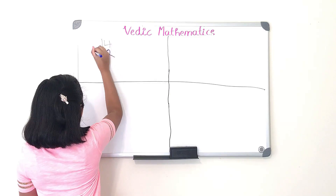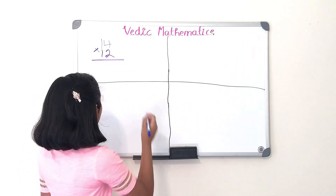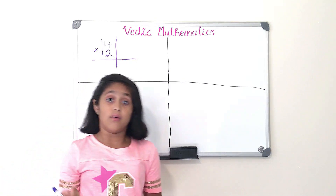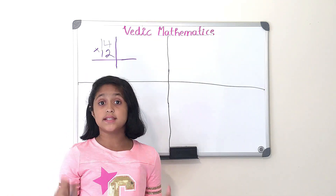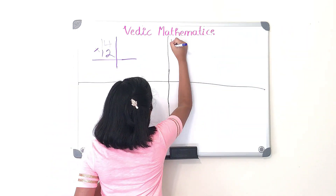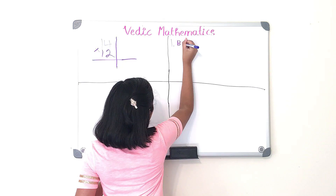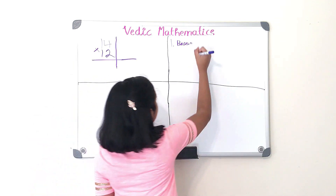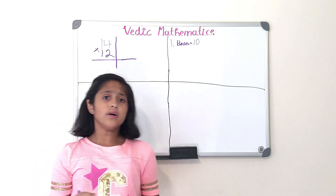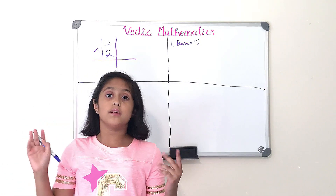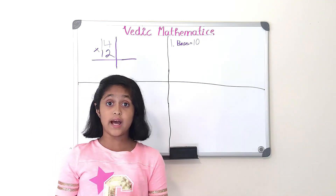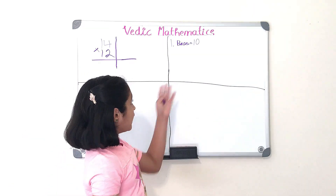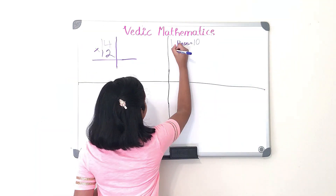First, we have to draw a T-chart, just like that. Step one is we have to decide the base. The base in this problem is going to be 10. You decide the base by choosing which power of 10 — such as 10, 100, or 1000 — is closest to the two numbers. In this problem it's 10, so we've decided the base.